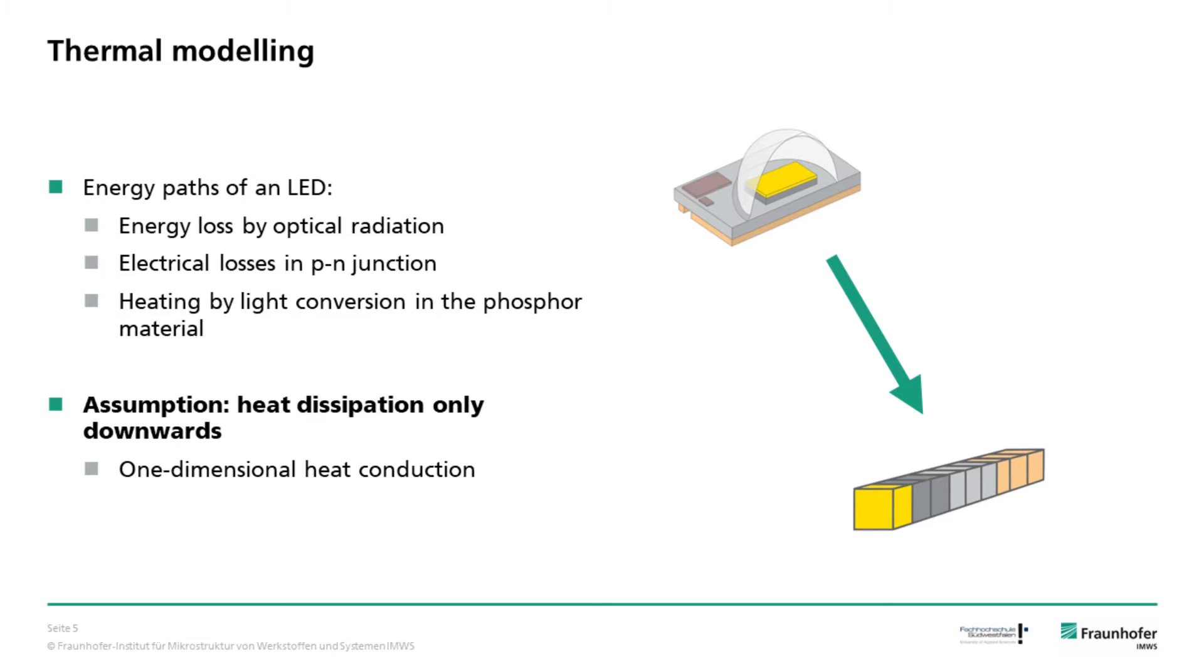If we put electrical energy into an LED, the largest part of it will be converted to light. Then there are electrical losses in the p-n junction. Additionally, there is heat generated in the phosphor. This is due to the conversion process in the phosphor, where relatively high energetic blue photons are converted to green and yellow photons with lower energy in order to generate white light.